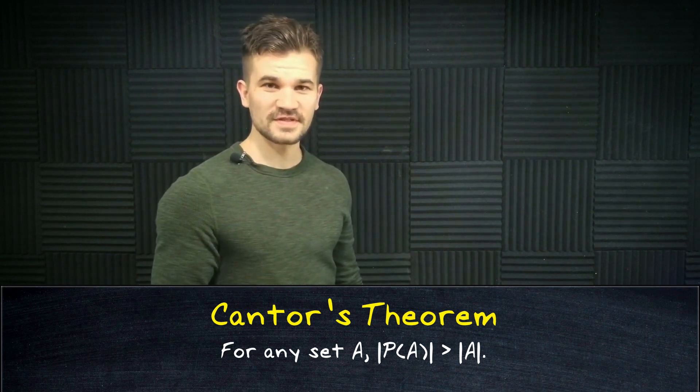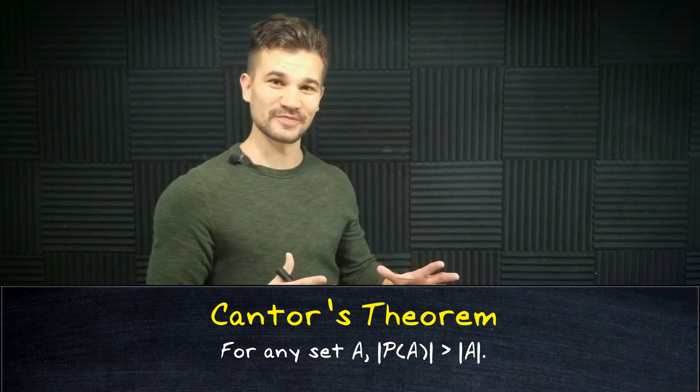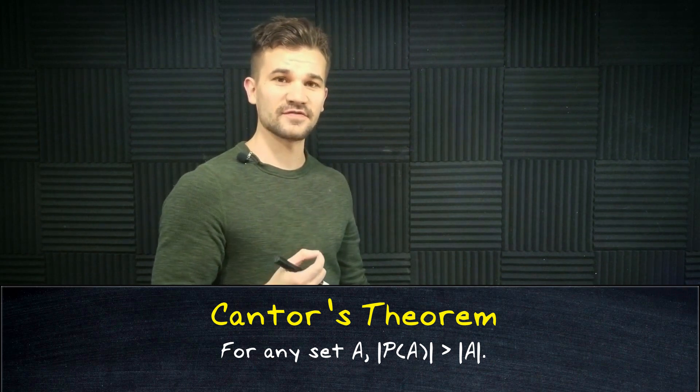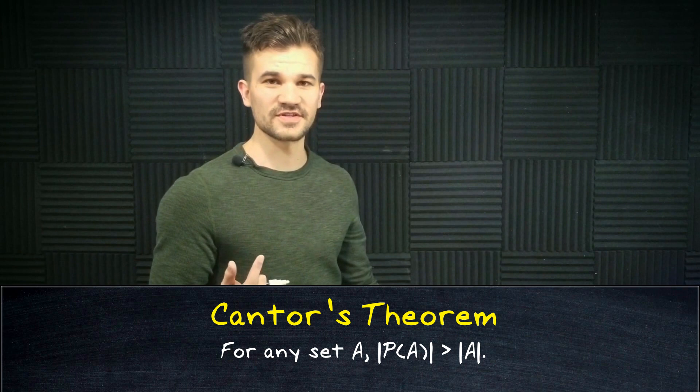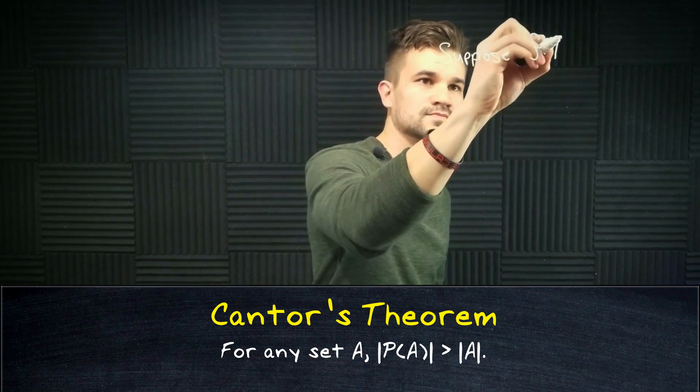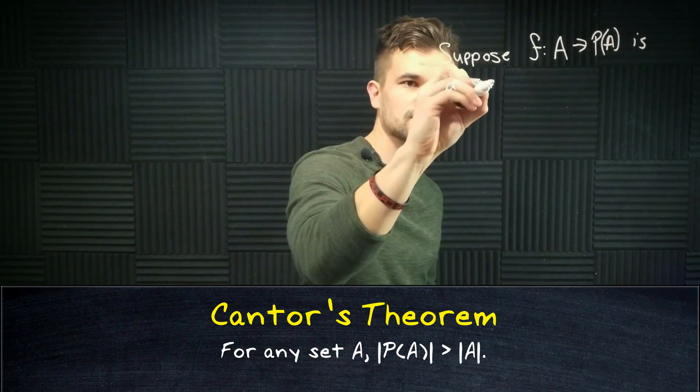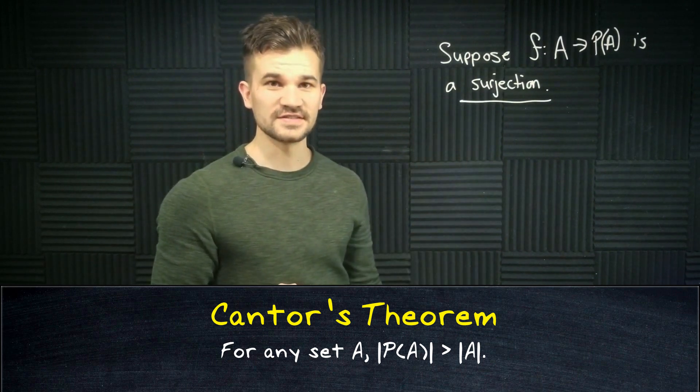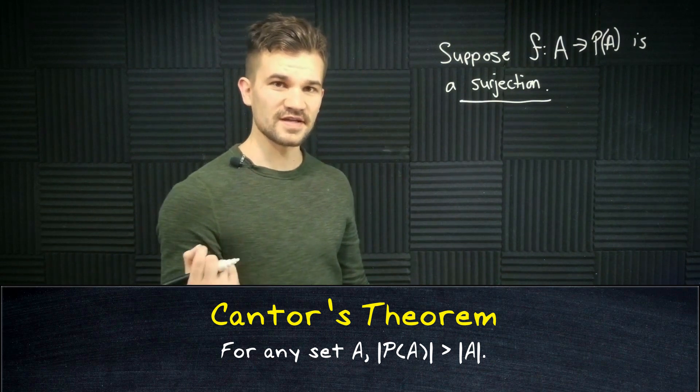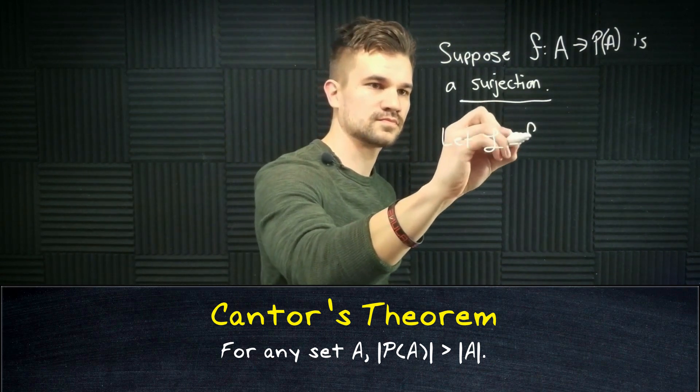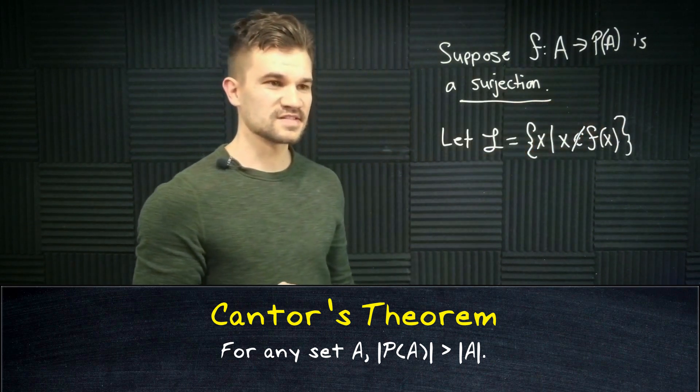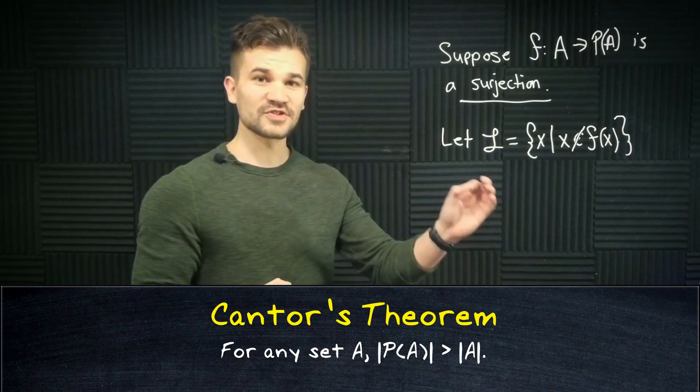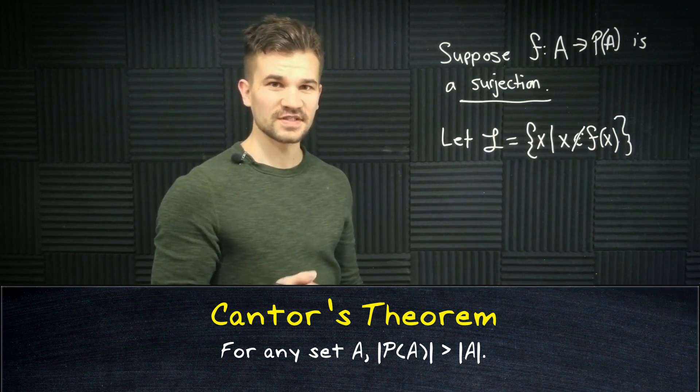Let's go through the proof of Cantor's theorem. This is one of my favorite proofs of all time because it's super simple and very elegant. It's a proof by contradiction so we'll begin by supposing that there's some surjective function from A to its power set where A is an arbitrary set. Now we have this surjection from A to P(A), the power set of A. So let's define this new set L. L is the set of X such that X is not in its own image. The set is well defined but the surjectivity of F is going to lead to a contradiction. Can you find the contradiction?